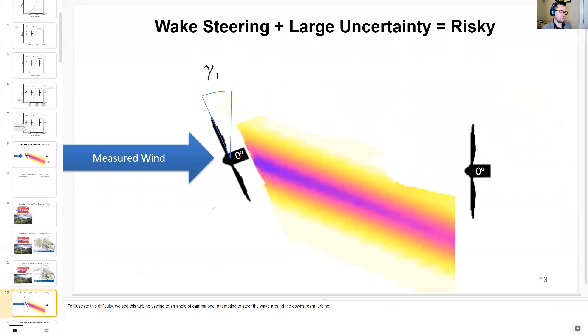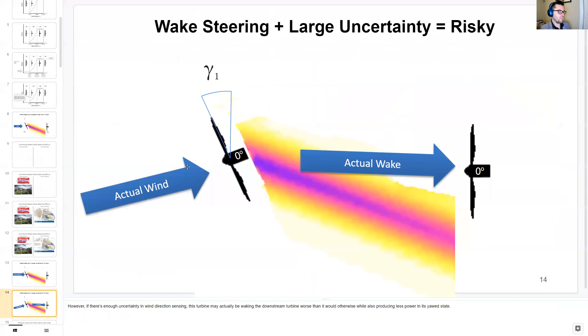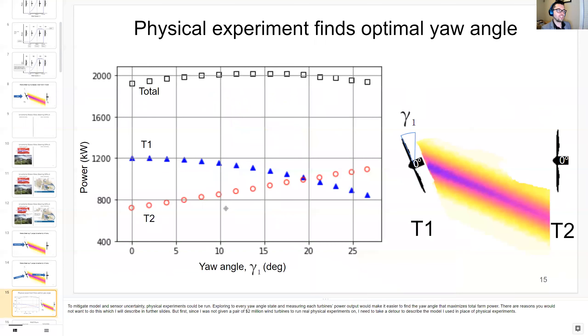And this is expressed in this illustration. We see that this turbine is yawing at an angle of gamma 1 attempting to steer the wake around the downstream turbine, and it thinks the wind is coming through at this angle, when maybe the actual wind direction is coming slightly lower in degrees. So then this turbine is actually deflecting the wake directly into the downstream turbine. This just illustrates the risk of wake steering when you actually have a lot of uncertainty.